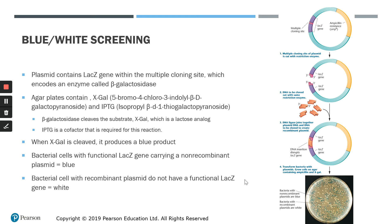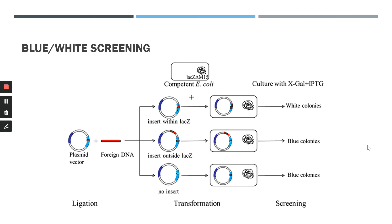However, this method does not differentiate between bacteria that have the correct insert DNA fragment and bacteria that may have an incorrect fragment inserted within the multiple cloning site. This diagram summarizes the process: foreign DNA incorporated within the LACZ gene results in white colonies; insert DNA introduced outside the LACZ site or no insert at all results in blue colonies.